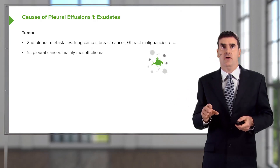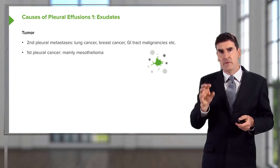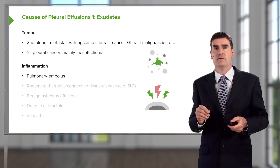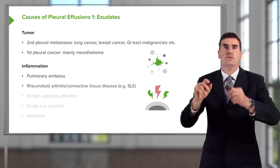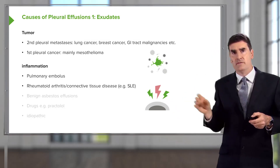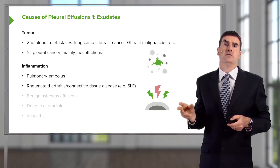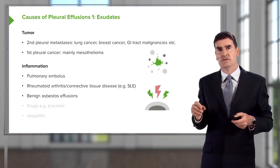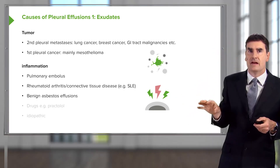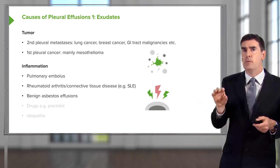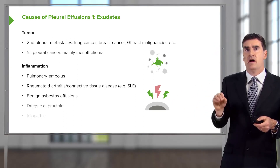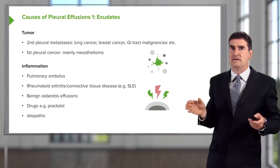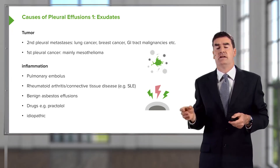There are other causes of exudative pleural effusions that basically involve pleural inflammation. Probably the commonest cause might be a pulmonary embolus, where you often get small effusions. Then there are connective tissue diseases — rheumatoid arthritis and systemic lupus erythematosus are causes of inflammatory pleural effusions. Benign asbestos effusions occur in people exposed to asbestos where it has inflamed the pleura without causing mesothelioma. Occasionally drugs can cause pleural effusions, the classic example being practolol. And many exudative pleural effusions cannot be identified and are characterized as idiopathic.